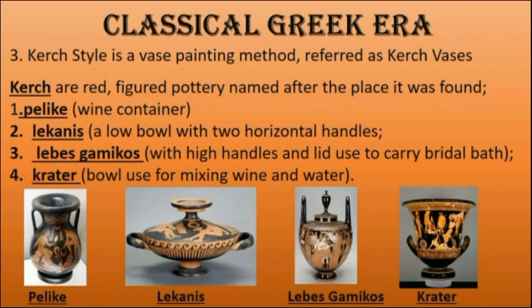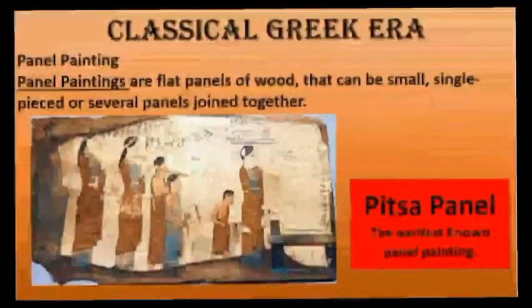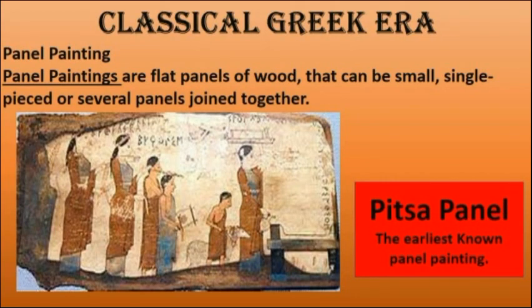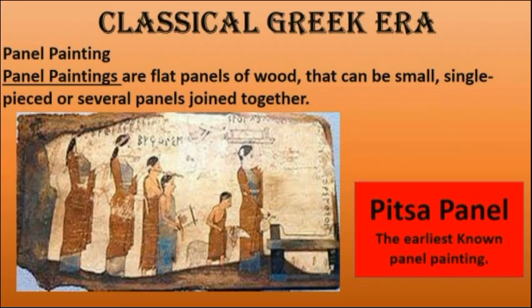Ang polychromy ay ang paggamit ng mga iba't ibang kombinasyon ng kulay, especially the brilliant ones, at ginagamit nila ito in a creative manner. Isang halimbawa ng paintings from classical Greek era ay ang panel painting. Ito ay ang pagpipinta sa mga flat panels of wood that can be small, single piece, or several panels joined together. Isa dito ay ang Pitsa panel, which is considered the earliest known panel painting. Gumagamit sila ng different pieces of wood — pwedeng isa lang o several pieces pinagdidikit-dikit to come up with a masterpiece.